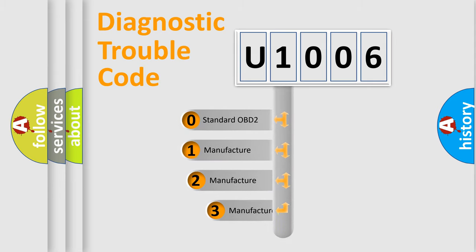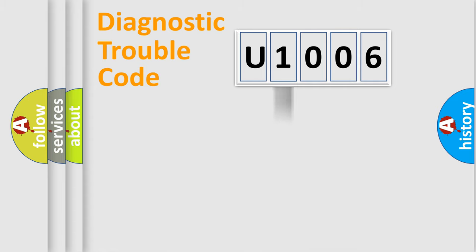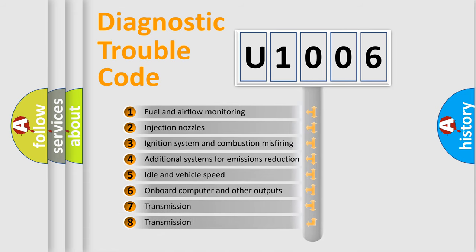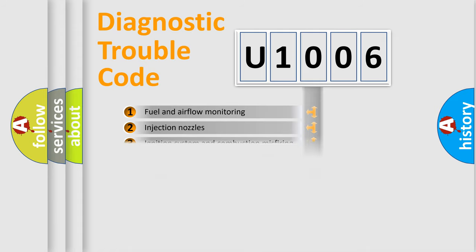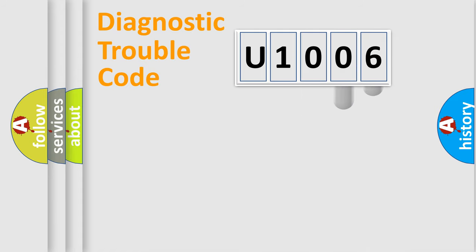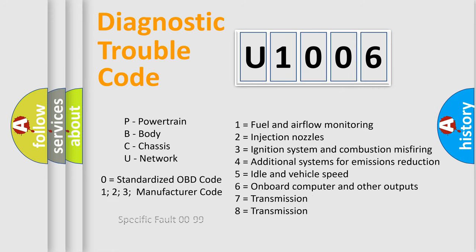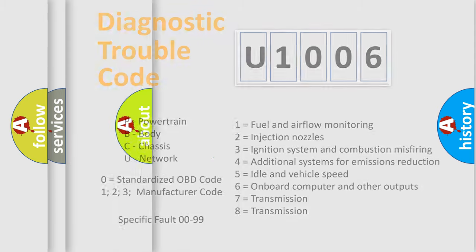If the second character is expressed as zero, it is a standardized error. In the case of numbers 1, 2, or 3, it is a manufacturer-specific expression of a car-specific error. The third character specifies a subset of errors. This distribution is valid only for the standardized DTC code, and only the last two characters define the specific fault of the group. This division is valid only if the second character code is expressed by the number zero.